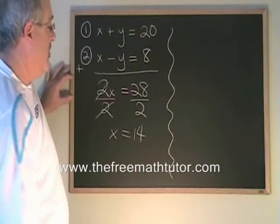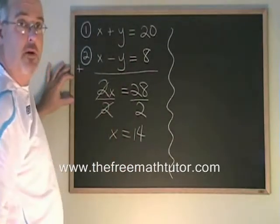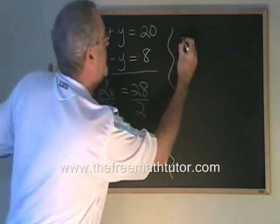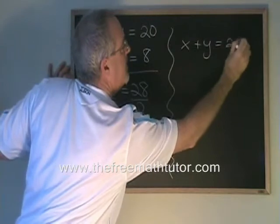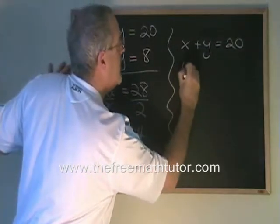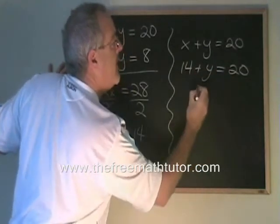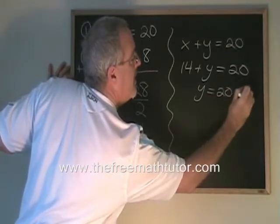To find what y is equal to, I plug x equals 14 into either of the original equations. Let's try equation 1. We have x plus y equals 20. If I replace the x with 14, we have 14 plus y equals 20. Doing algebra, y is equal to 20 minus 14.